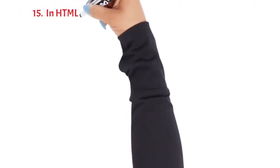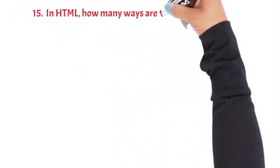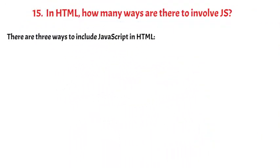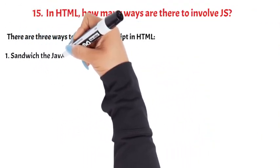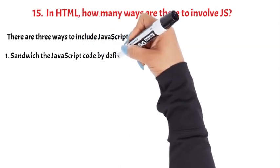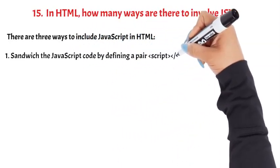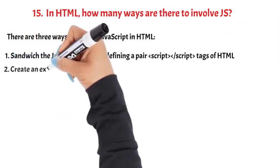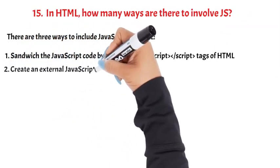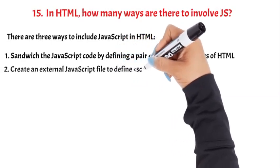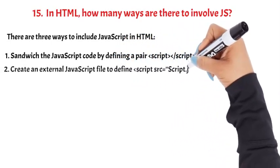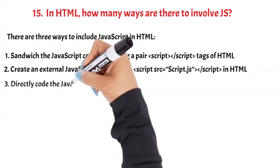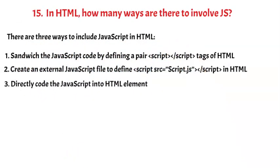Question 15: In HTML, how many ways are there to include JS? There are three ways to include JavaScript in HTML. 1) Wrap the JavaScript code within a pair of script tags. 2) Create an external JavaScript file and reference it with script src='script.js'. 3) Directly code the JavaScript into an HTML element.